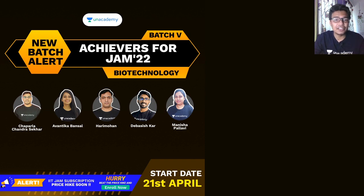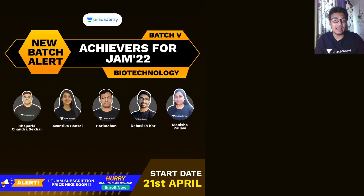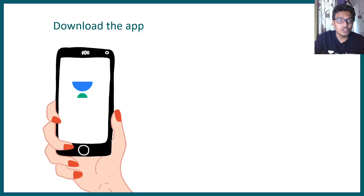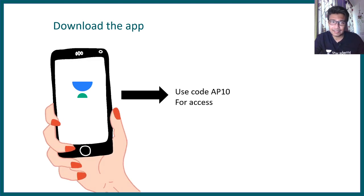Unacademy is starting an Achiever batch exclusively for IIT JAM 2022, where India's top educators would be your mentors and can help guide you throughout this process. The doubt clearing sessions would really help you understand concepts better. It is starting from 21st April, so please note the date and enroll now. You can download the app and use my code AP10 to access the courses, which also gives you a 10% discount.